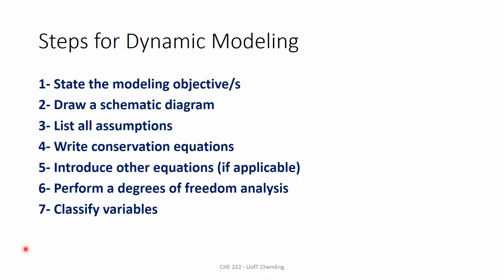This slide summarizes the steps we use for dynamic modeling of a system. We first start by stating the modeling objectives. Then we draw a schematic diagram of the process to understand it better. We list all the assumptions and write conservation equations, whether mass balance or energy balance. Then we introduce auxiliary equations, whether thermodynamic or fluid dynamic. Then we perform a degrees of freedom analysis and finally classify variables into input variables, output variables, etc.